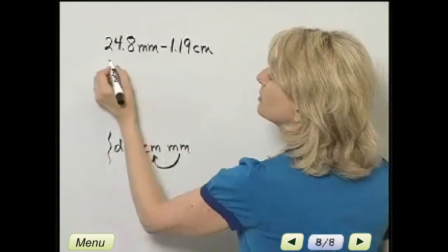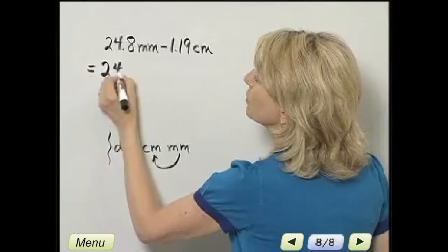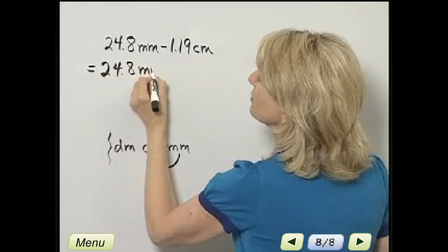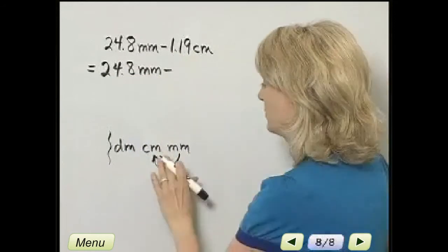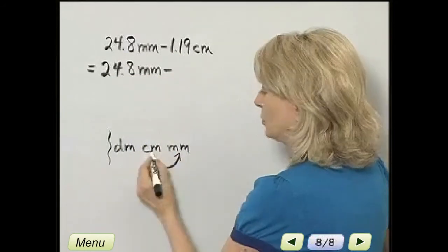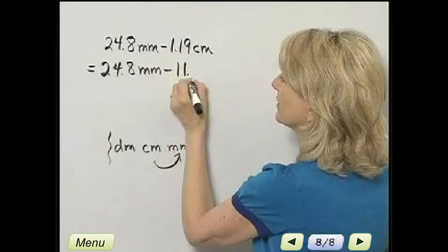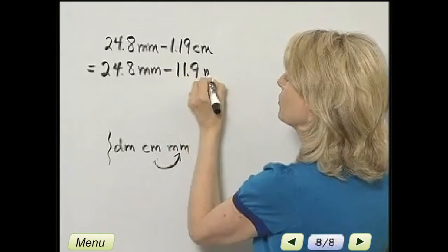Now everything's going to be in millimeters. So this is 24 and 8 tenths millimeters minus centimeters to millimeters, one place to the right. So that's 11 and 9 tenths millimeters.